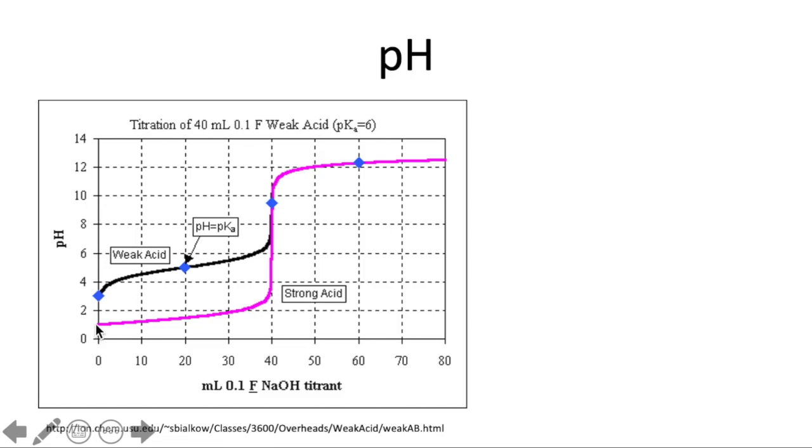So the first thing that you notice is the strong acid starts lower in pH than the weak acid. That makes sense because our strong acid is going to be completely dissociated, while our weak acid will only be partially dissociated. So the actual concentrations of H+ will be lower in our weak acid, giving it a higher pH.